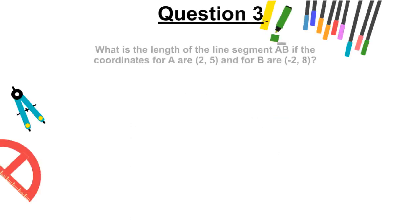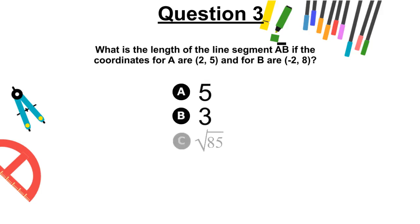Question 3. What is the length of the line segment AB if the coordinates for A are (2, 5), and for B are (-2, 8)? A, 5, B, 3, C, the square root of 85, or D, square root of 153?